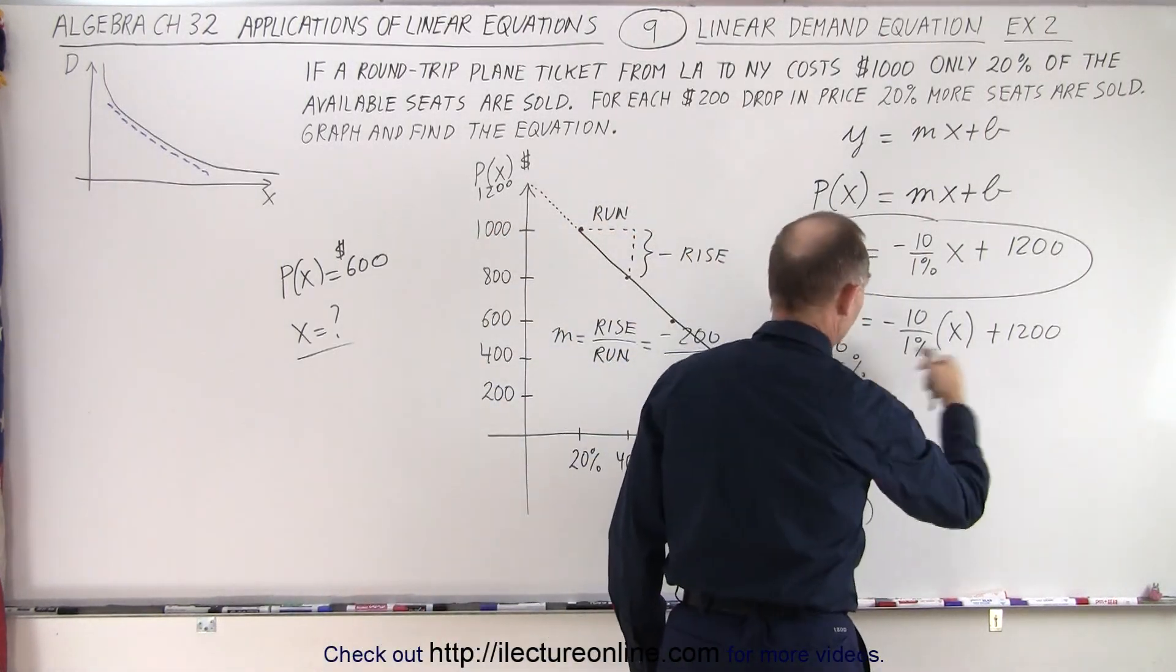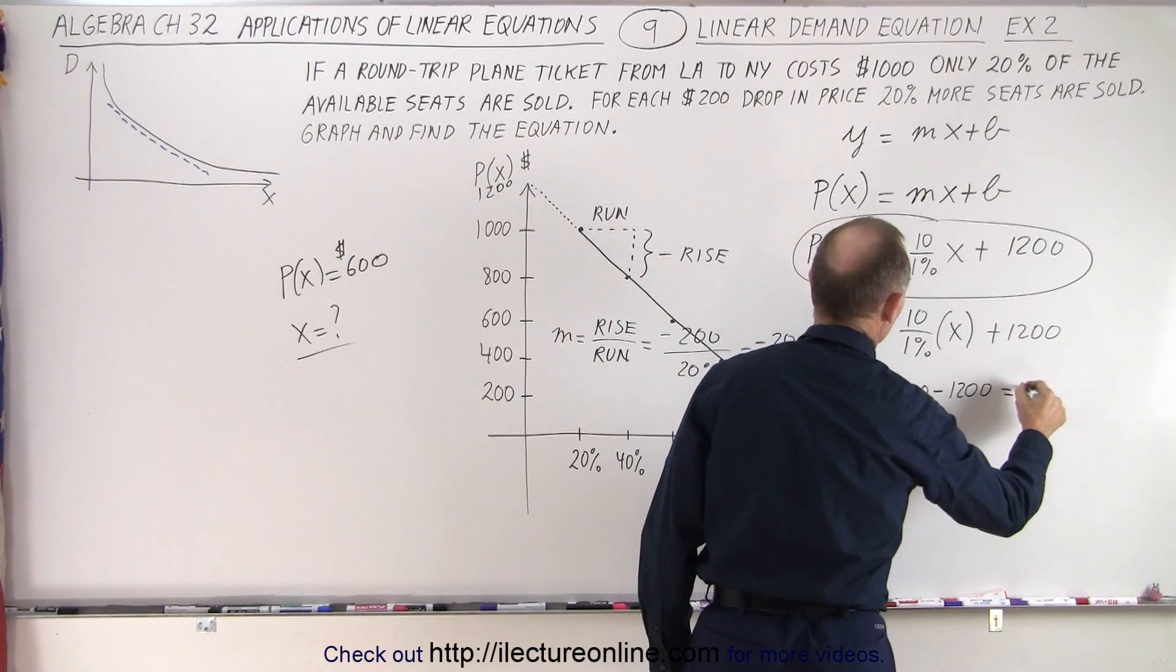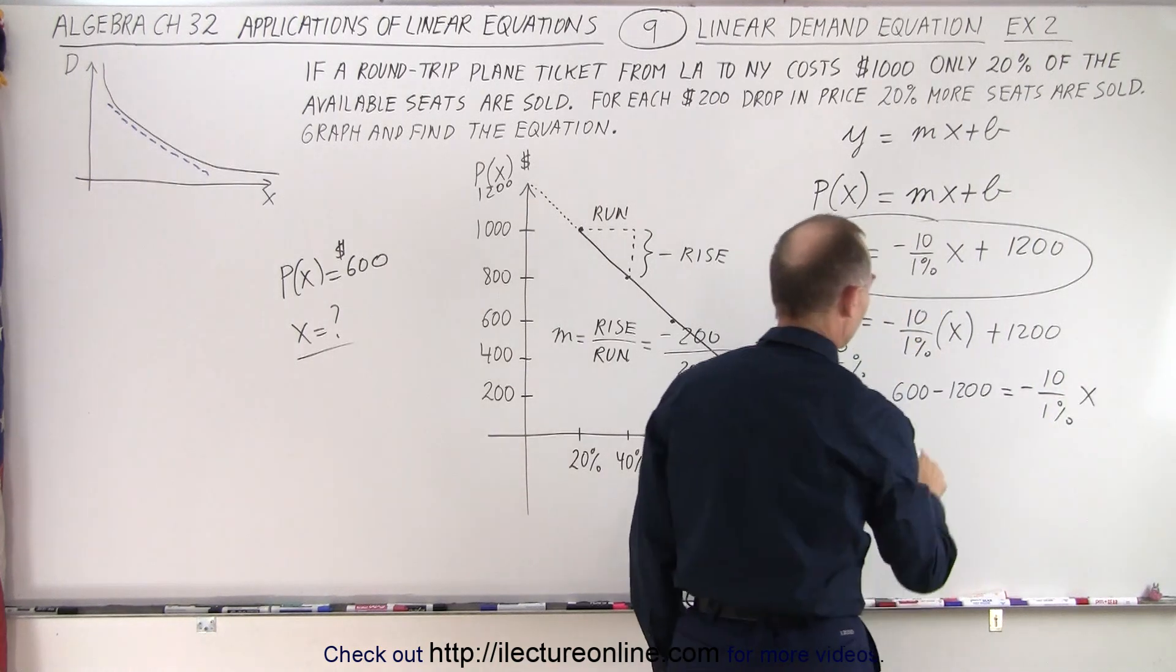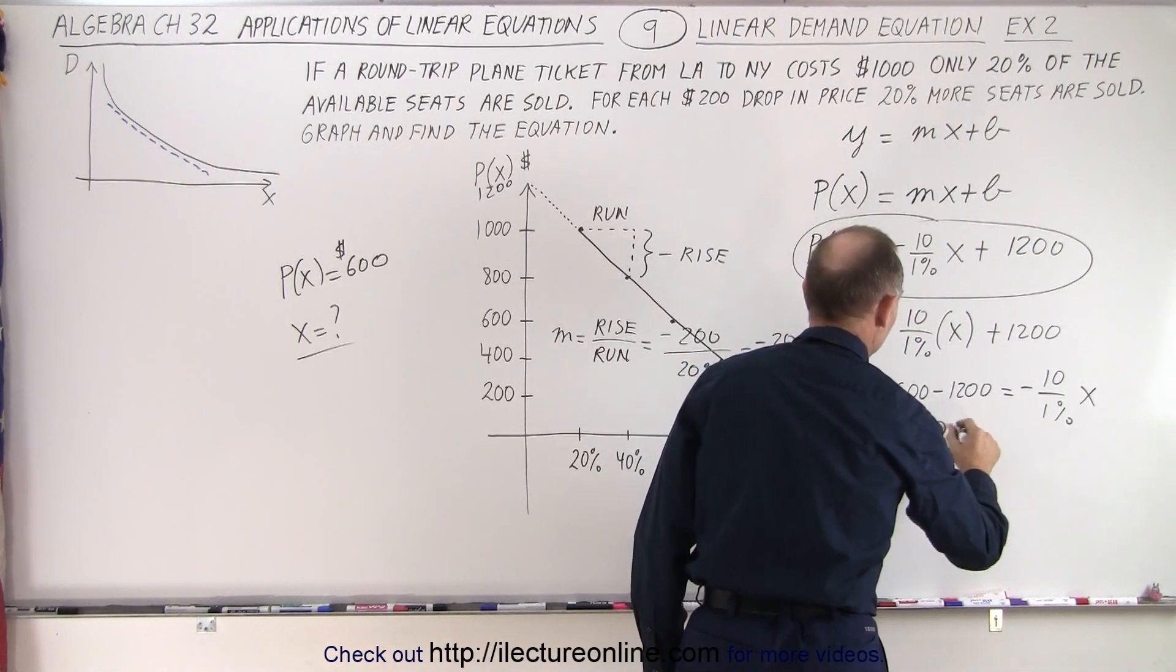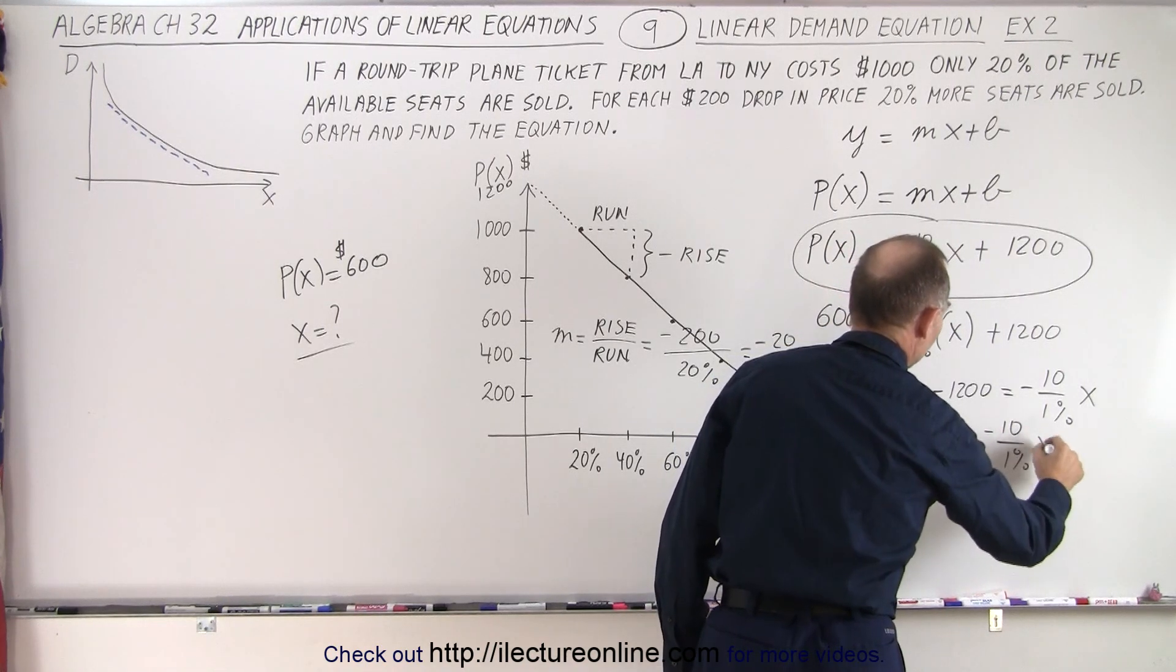So we're solving that for x. Well, first of all, we're going to subtract 1,200 from both sides. So we end up at 600 minus 1,200 equals minus 10 over 1% times x. So that would be minus 600 equals minus 10 divided by 1% times x.